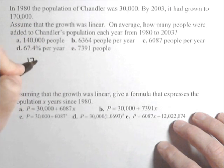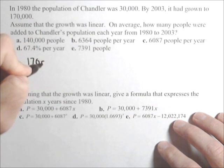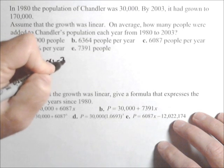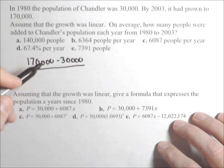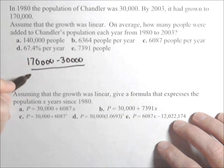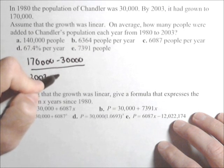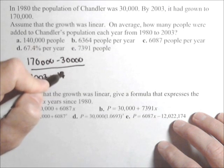So we're gonna do that by doing the change in number of people, so 170,000 minus 30,000, over the change in time. If you want to use the years here, that's fine. The big thing is we just need to make sure that the change in years is 23 years.